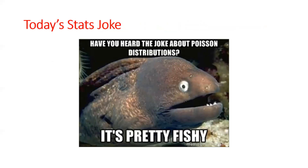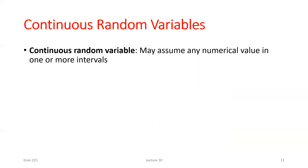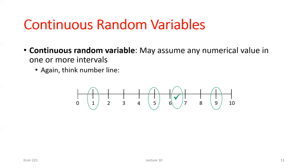I'm going to introduce some general facts about continuous distributions, because we're really only going to focus on the uniform distribution before the exam. After the exam we'll start with the normal distribution, which we'll use for a long time throughout the semester. A continuous random variable, unlike a discrete random variable, can take on all integer values but also any fraction of them.